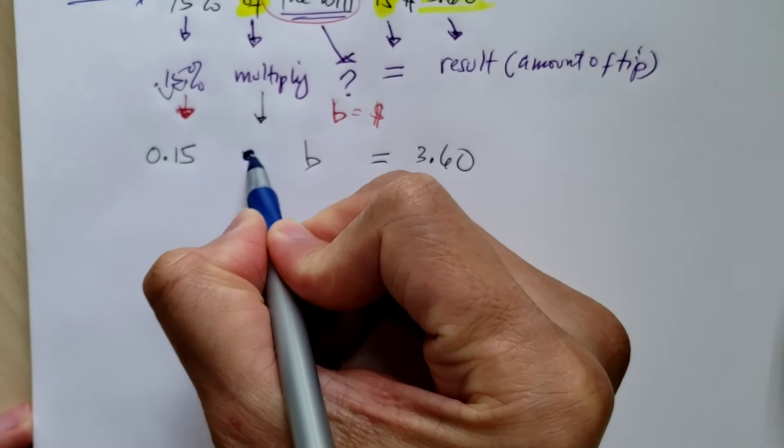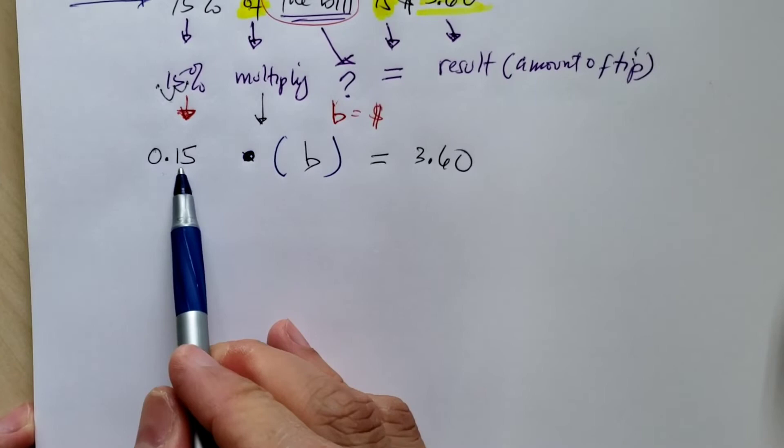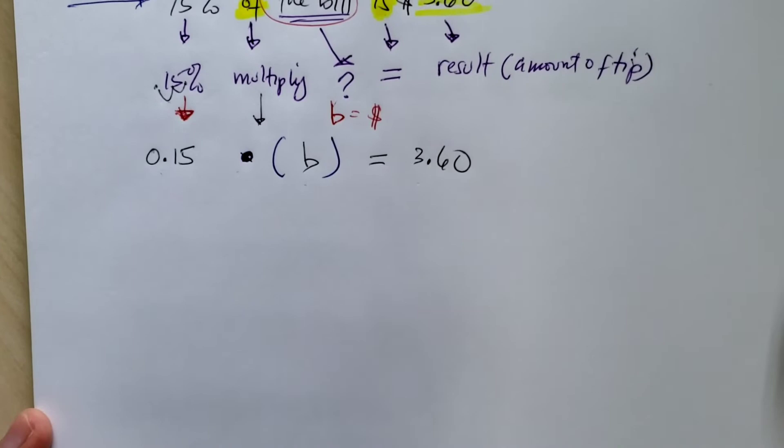Now, I know I said that we're on pre-algebra, that we're supposed to use the dot or the parentheses. So I'm going to change that part. So we got 0.15 times B equals $3.60.